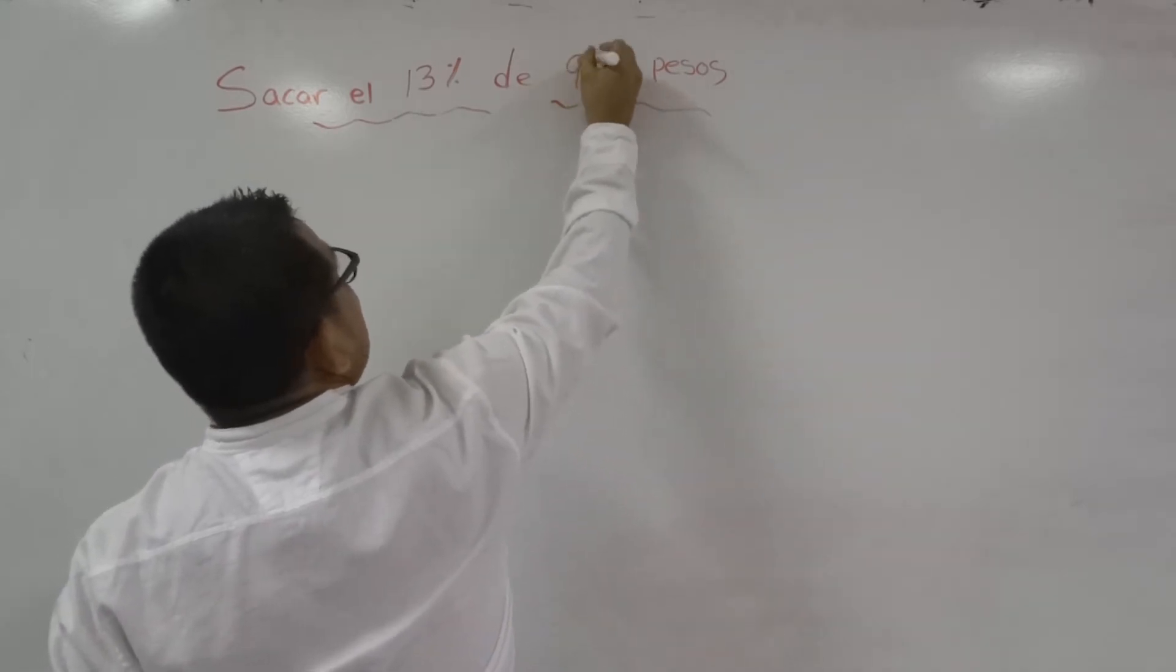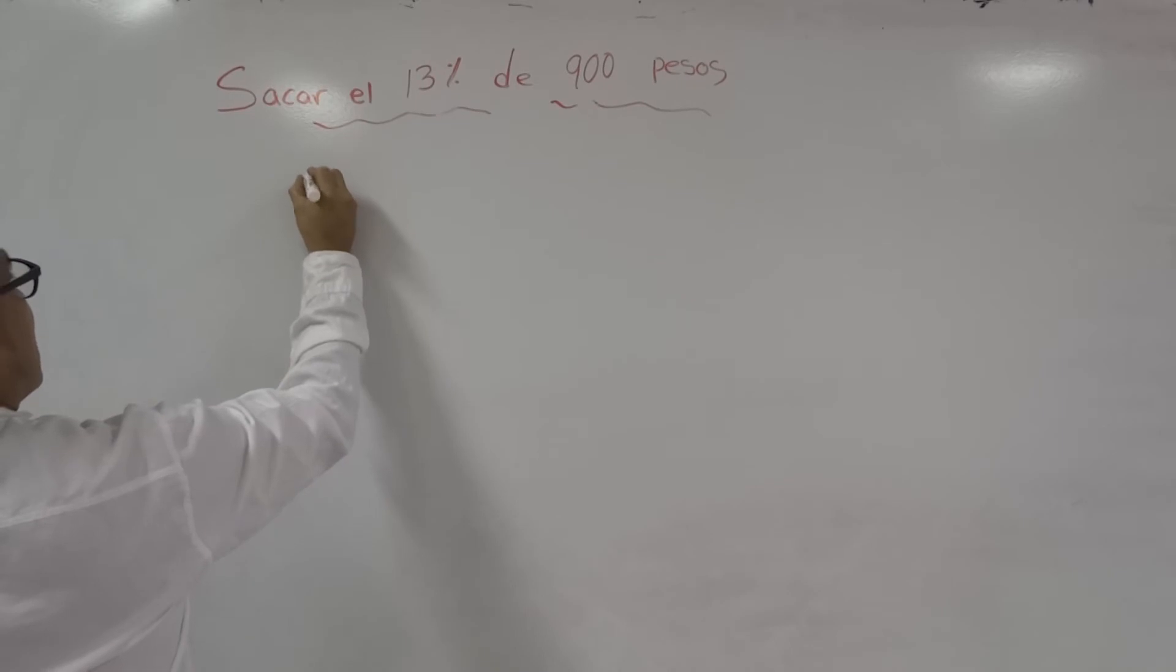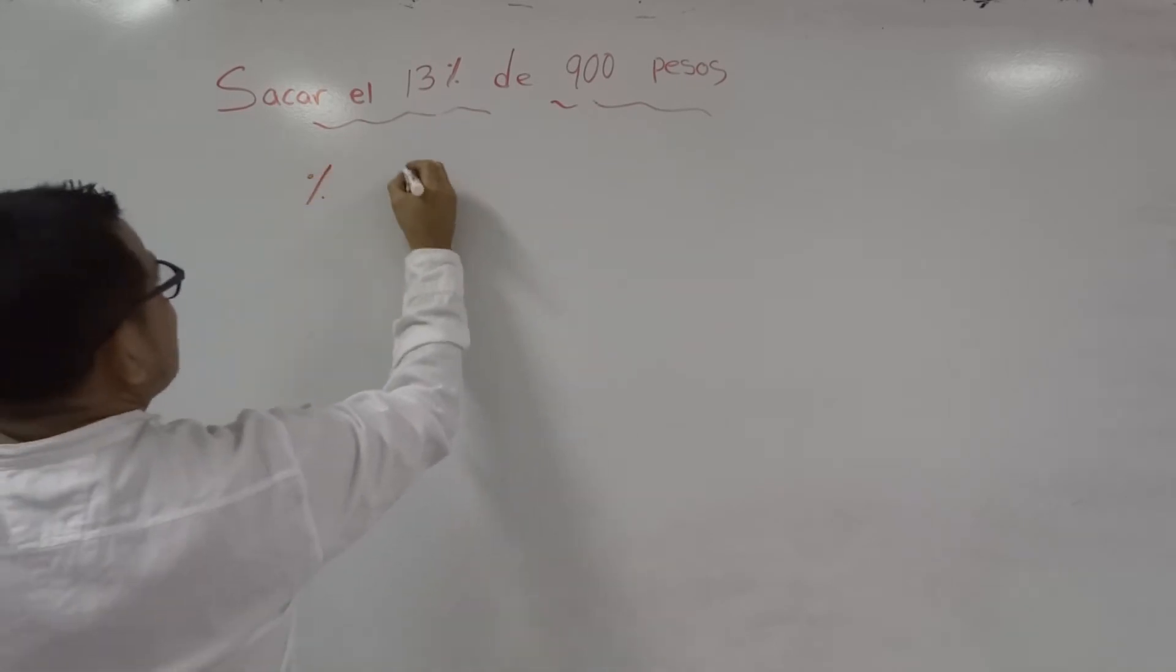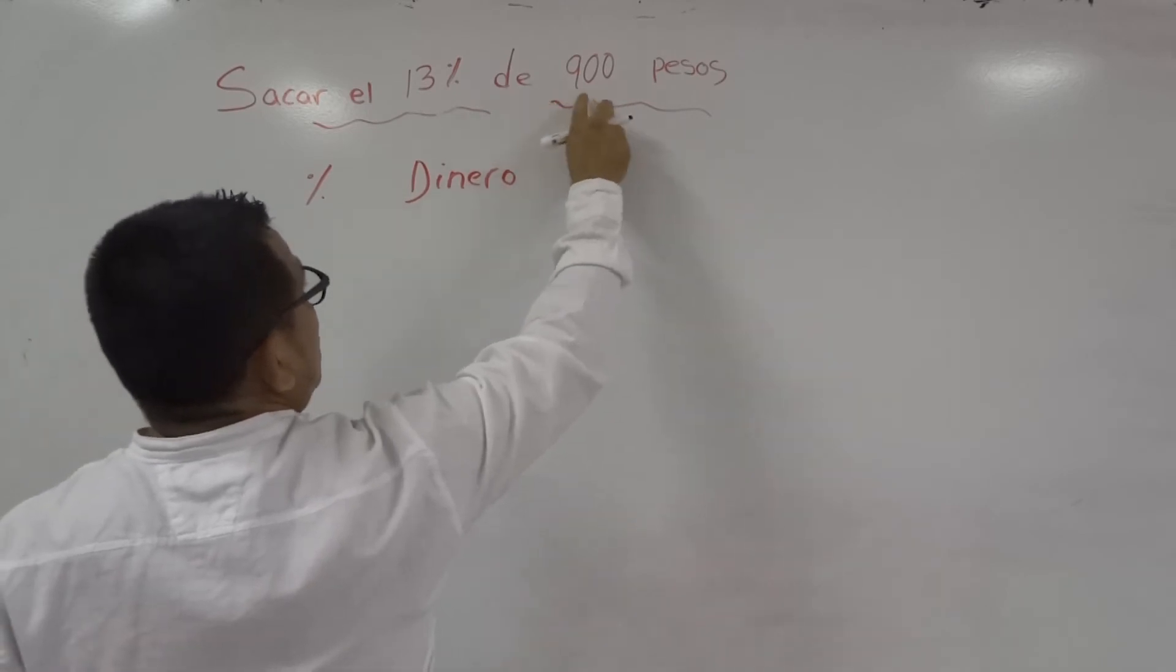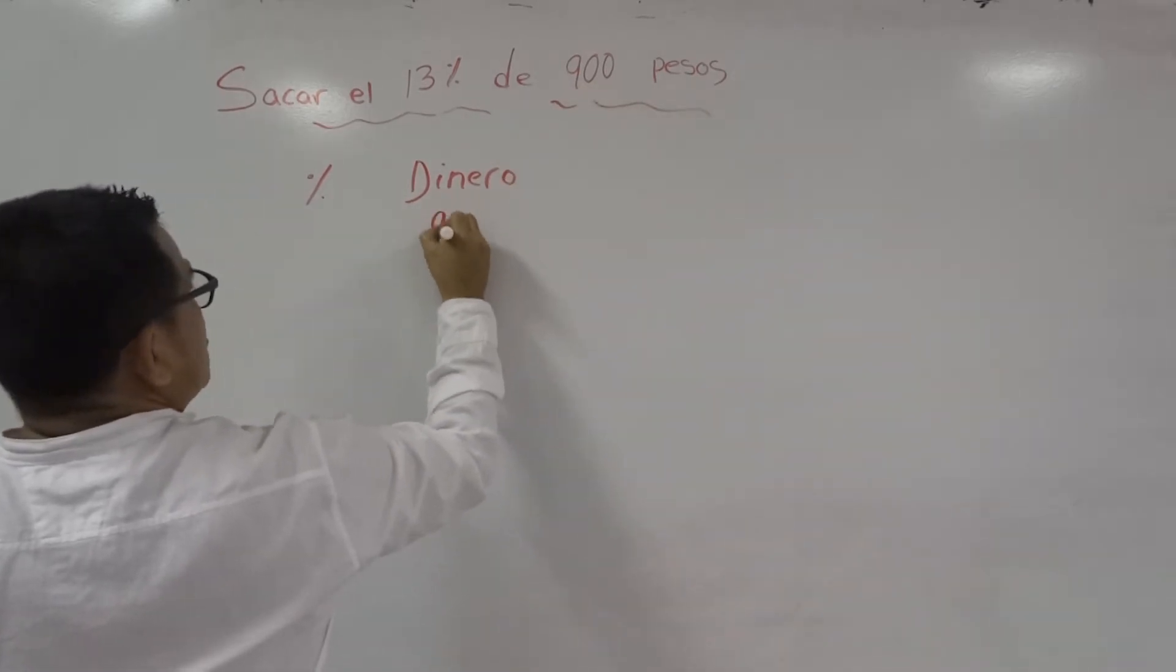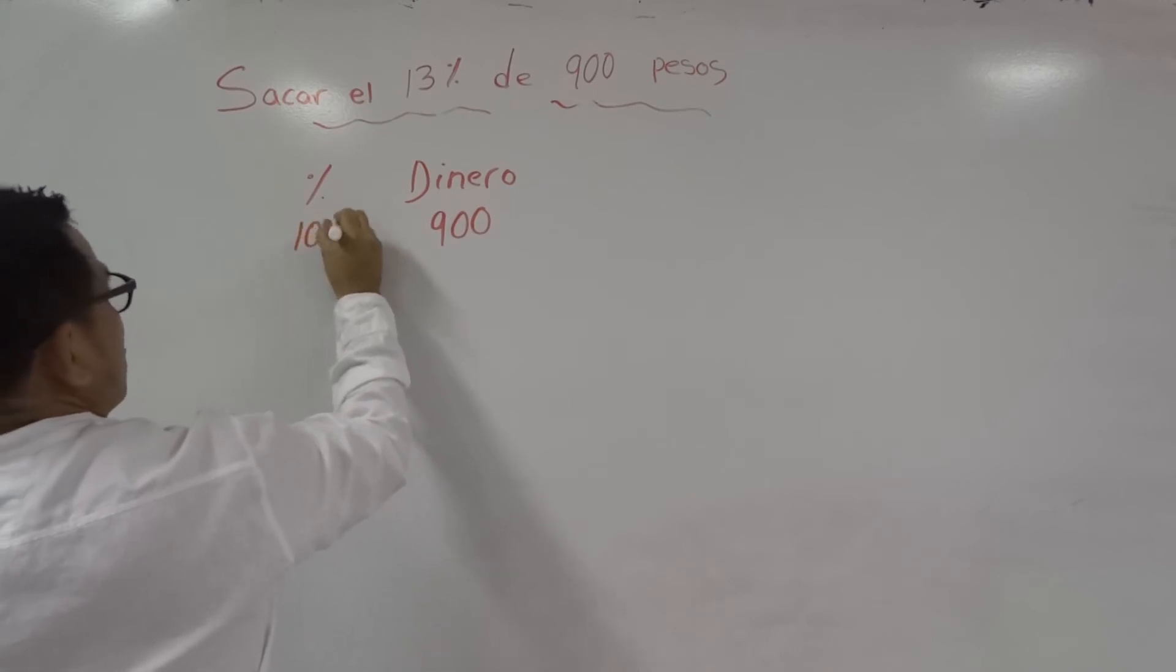900, nada. Lo hacemos aquí. Ponemos porcentajes y aquí dinero. Dónde está el dinero: 900. 900 pesos, esto es al 100%.